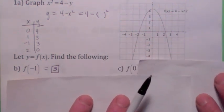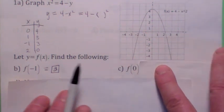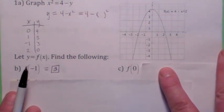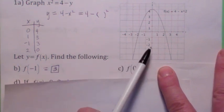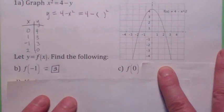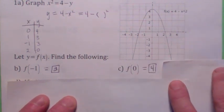How about another one? What is f of 0? Remember what that is? That's the value of y when x is 0. When x is 0, y is 4. We also call that the y-intercept, right? The y-intercept is 4.